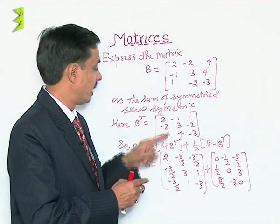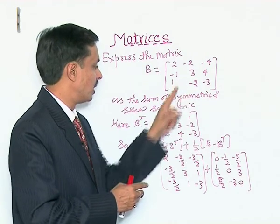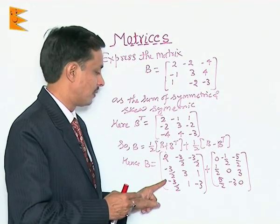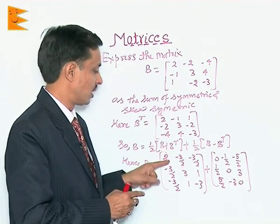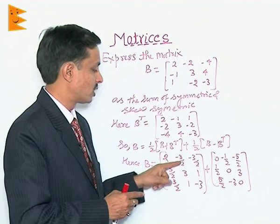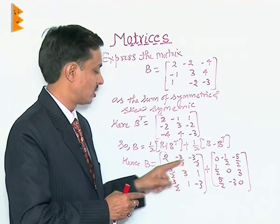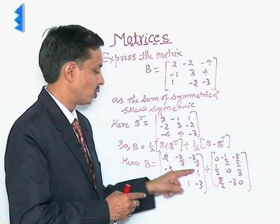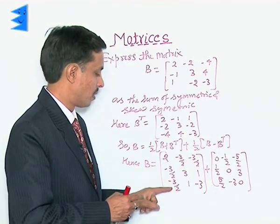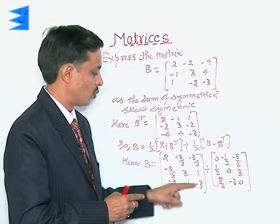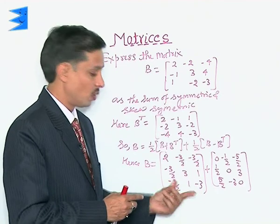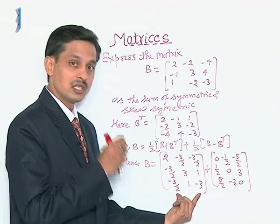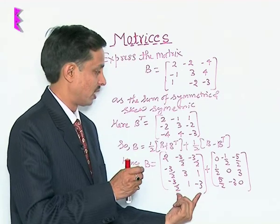So, on adding B and B transpose and multiplying by half, the result is the symmetric part: [2, -3/2, -3/2; -3/2, 3, 1; -3/2, 1, -3]. This is clearly a symmetric matrix.